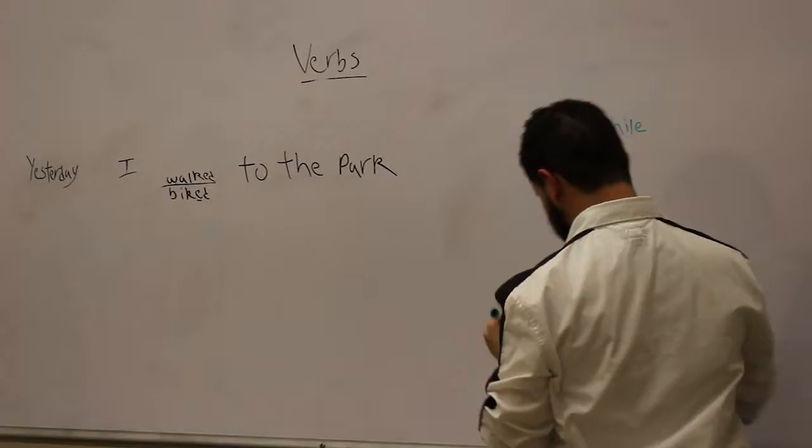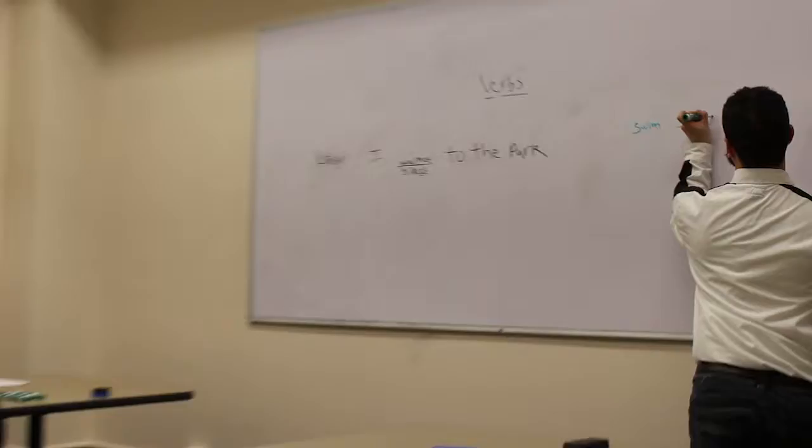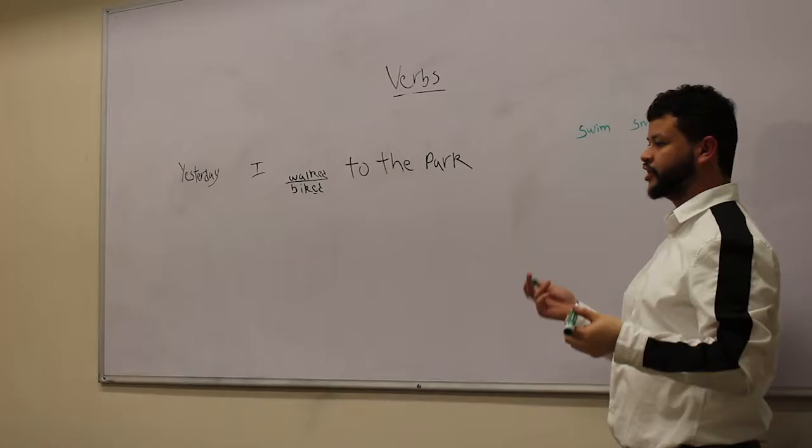Alright, so we have the verb swim and the verb smile. Which one of these, what do you think is the regular verb? Yes, smile. And if we said smile. Correct. We would add the e and d. And swim is going to be an irregular verb, and the verb we would say this is swam.